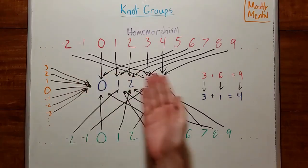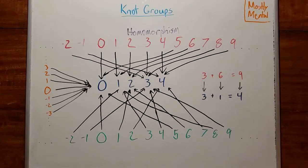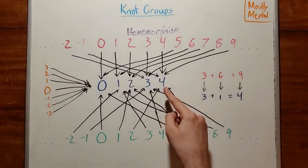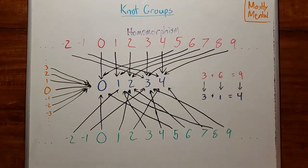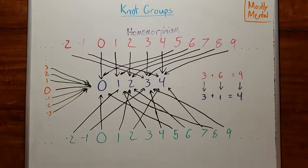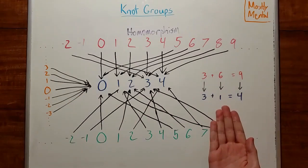And this isn't the only possible homomorphism here. We might just as well map 0 onto 0, 1 onto 2, 2 onto 4, and so on. Or we might take everything and map it onto 0. But all of these maps will follow this same rule.